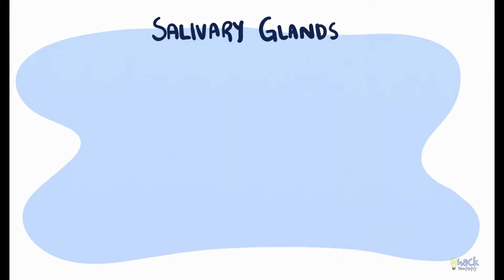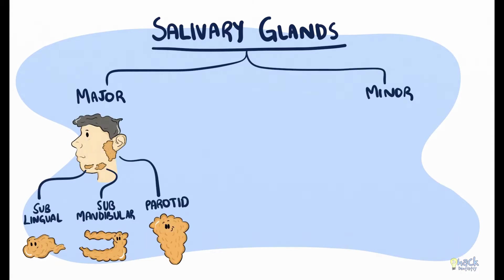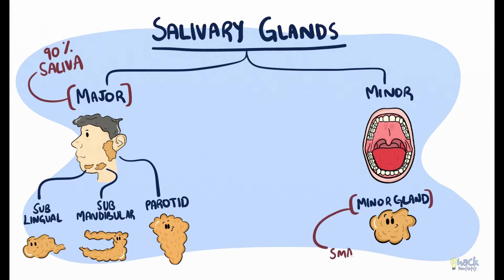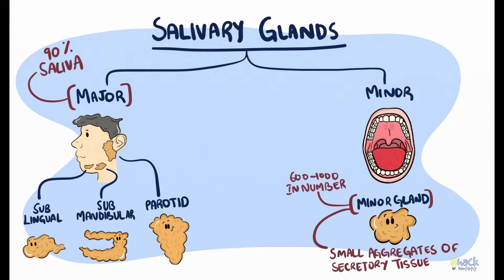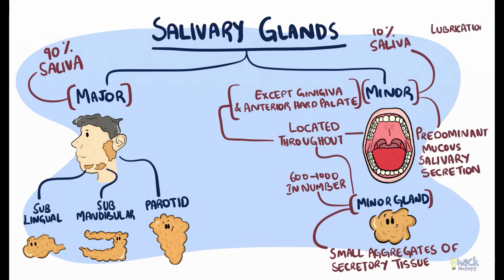Salivary glands are of two types: the major and the minor salivary glands. The parotid, submandibular, and the sublingual glands form the major glands, which together secrete 90% of the saliva. Minor salivary glands are small aggregates of secretory tissue and are around 600 to 1000 in number. They are located throughout the oral cavity except in the gingiva and the anterior part of the hard palate. Though they secrete only 10% of the saliva, minor salivary glands are predominantly responsible for mucous salivary secretion lubricating the oral cavity.